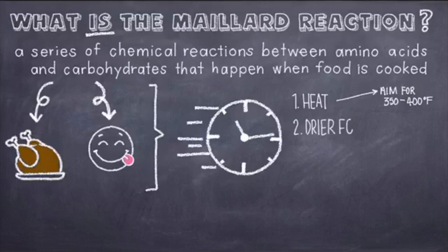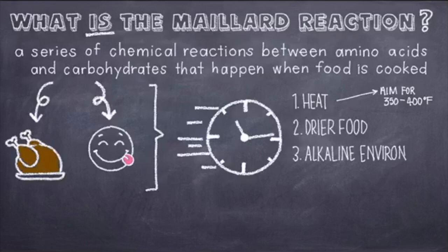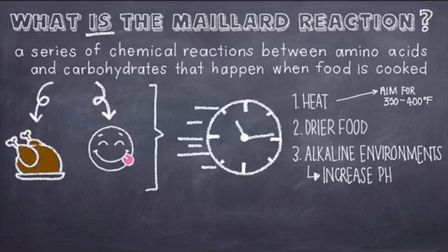Two, we use drier foods. Pat dry meats and vegetables before cooking them. Three, we create more alkaline environments. In other words, increase the pH. Rub baking soda on chicken wings for that extra crispy texture.